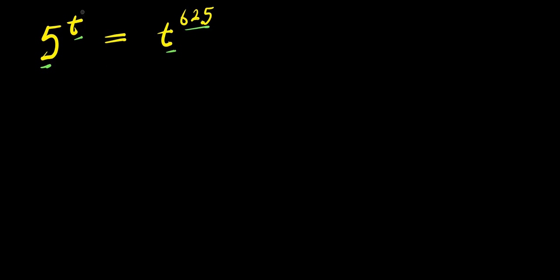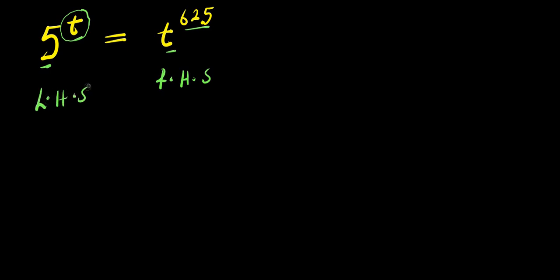I can start by eliminating this t. I want all the variables to be on the right-hand side of this equation, and all the numbers to be on the left-hand side of this equation.